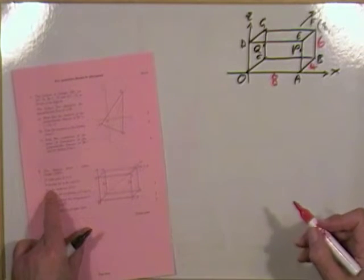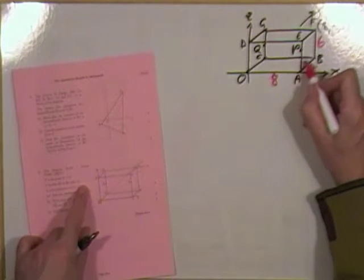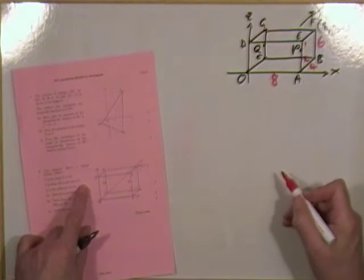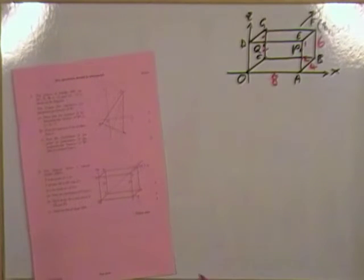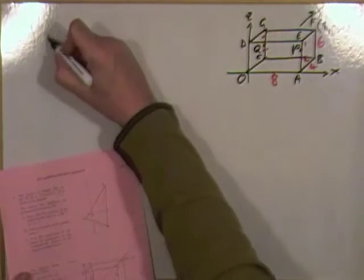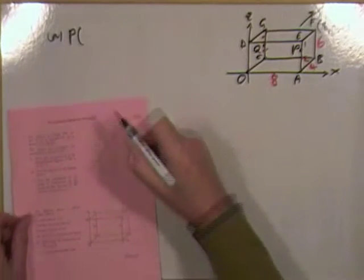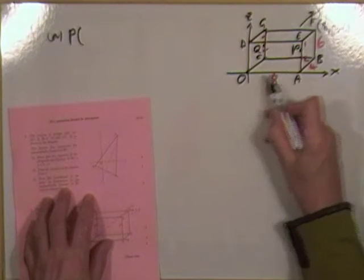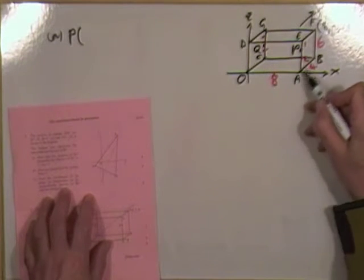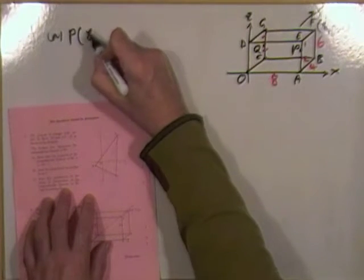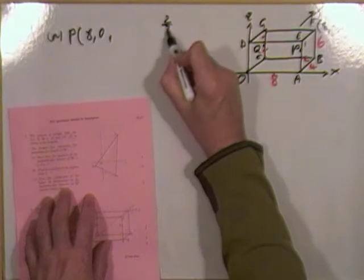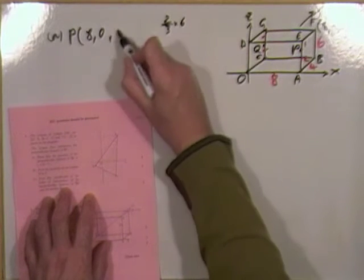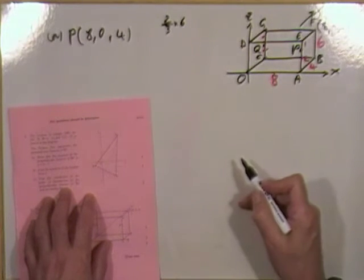P divides that in the ratio of 2 to 1, so it's 2 thirds of the way up. Q is the midpoint, so halfway up. First part: find the coordinates of P and Q. For P — go along 8 in the x direction, don't go back in the y direction at all, so it's 8, 0. Then 2 thirds of the way up: 2 thirds of 6 is 4. So P is the point 8, 0, 4.